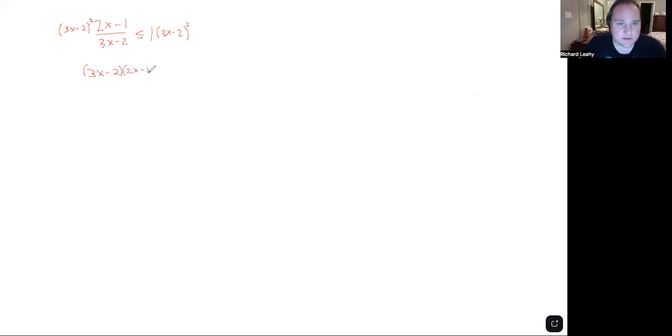I'm going to assume everybody's familiar with foiling. There's a shortcut here to square this: square the first, square the last, and multiply the 3x and negative 2 and double it. Foiling this side: 6x squared minus 4x minus 4x is negative 7x—that's our outers and inners.